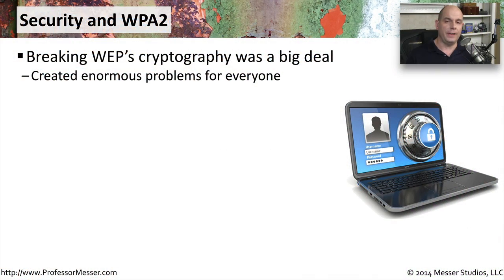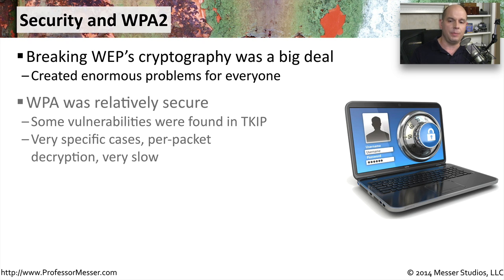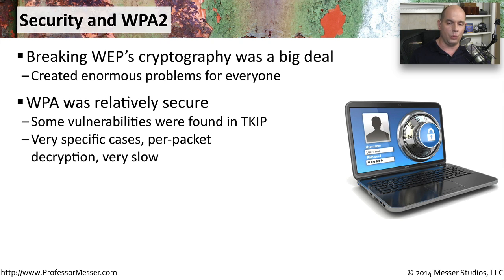When the cryptographic problems were found with the WEP encryption protocol, it was a big issue, something that needed to be resolved. We went back to the drawing board and came up with a new type of encryption called WPA. WPA itself was a little bit more secure. We didn't have that same problem with the initialization vectors and the replay attacks that we had with WEP. There were eventually some very minor vulnerabilities found with the WPA protocol surrounding the TKIP.